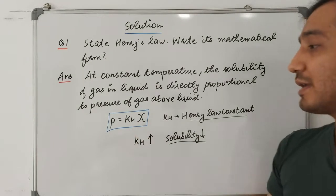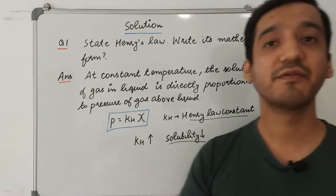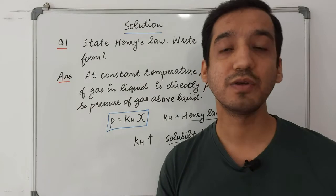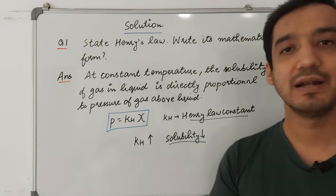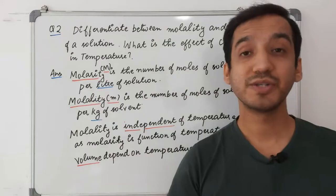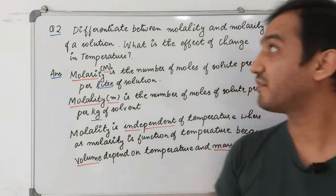The mathematical form is: partial pressure = kH × mole fraction. An important thing about kH: if the kH value is very high, then solubility will decrease.